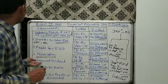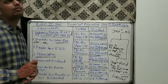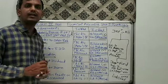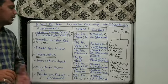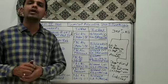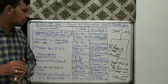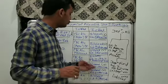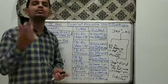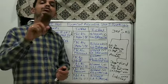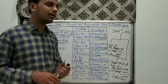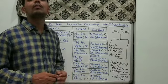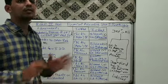Then comes proposed dividend. Suppose the bank has declared a dividend; the first entry goes into the P&L appropriation account — again the fourth part of P&L. The second entry moves to the balance sheet, specifically into Schedule 5 — other liabilities — where we add the proposed dividend.